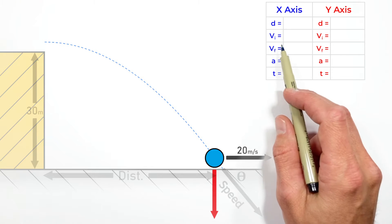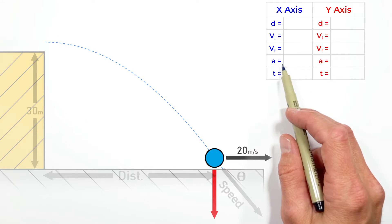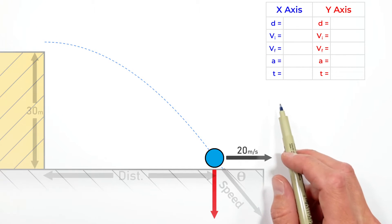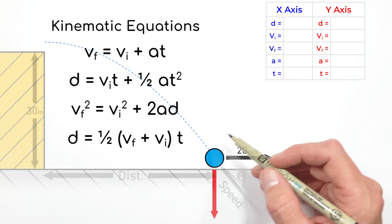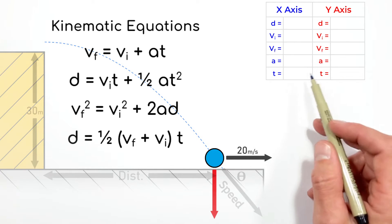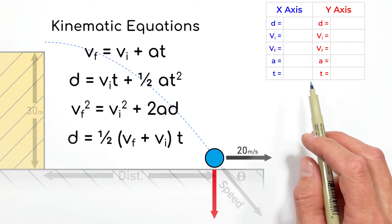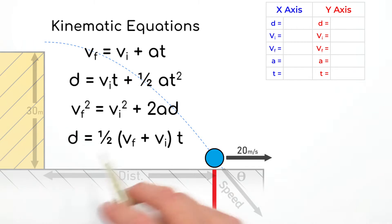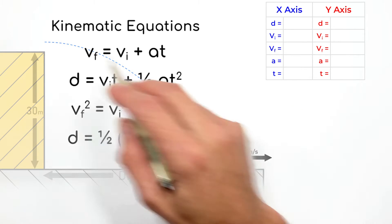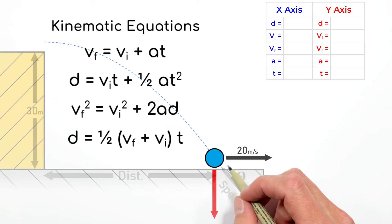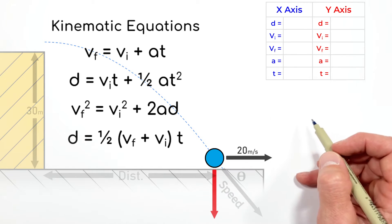So we have displacement, initial and final velocity, acceleration, and time for both axes. If you've seen the kinematic equations before, these variables should be familiar. Rather than dealing with one dimension where we only have five variables, because this ball is moving in two axes, we now have ten variables to deal with.